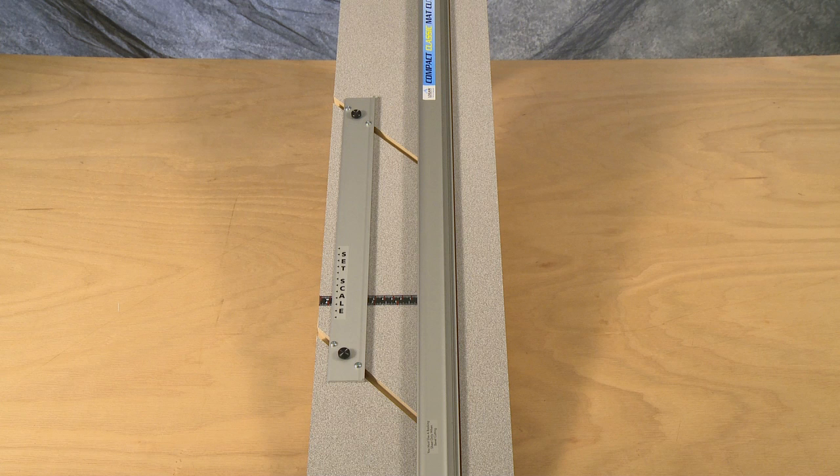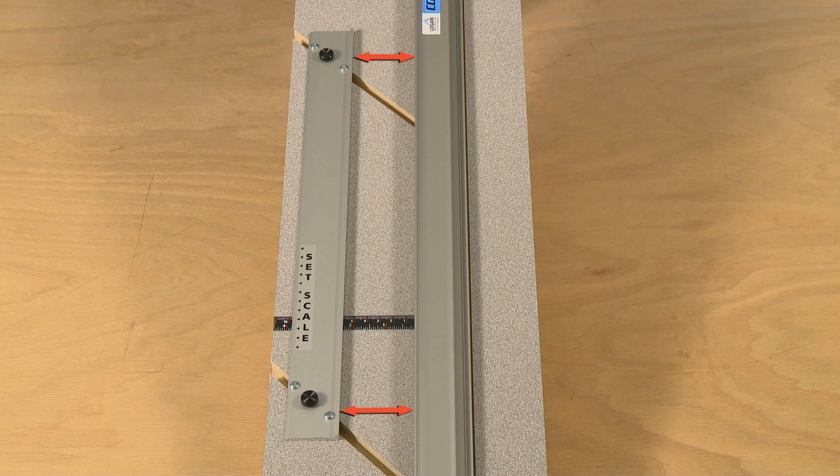It is important that the parallel mat guide is perfectly parallel with the guide rail in order to have perfectly consistent borders.